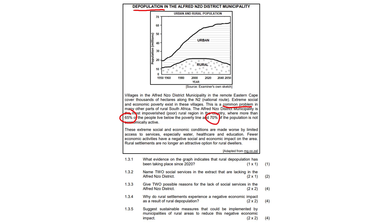Perhaps they're not formally employed or they're not even applying their trade in the informal sector. These extreme social and economic conditions are made worse by limited access to services, especially water, health care, and education. Few economic activities have a negative social and economic impact on the area. Rural settlements are no longer an attractive option for rural dwellers.